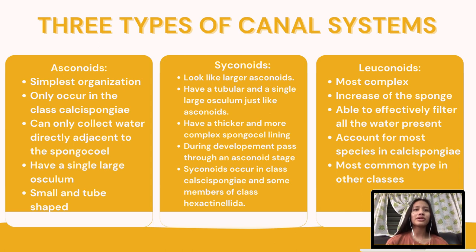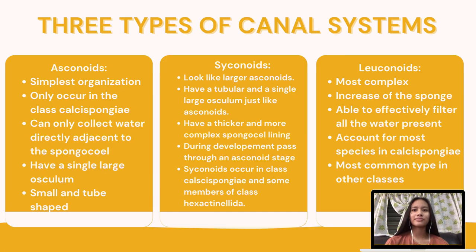The last and most complex are leuconoids. The increase of sponge size allows for a larger surface area of food-collecting regions. Choanocytes line these regions and are able to effectively filter all the water present.